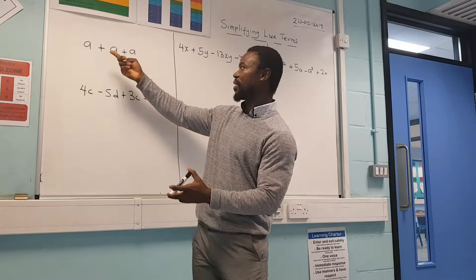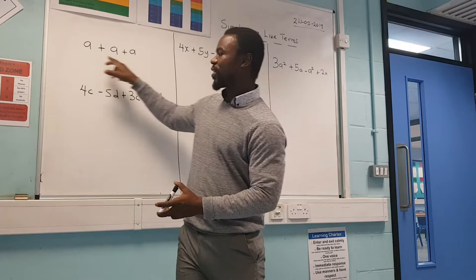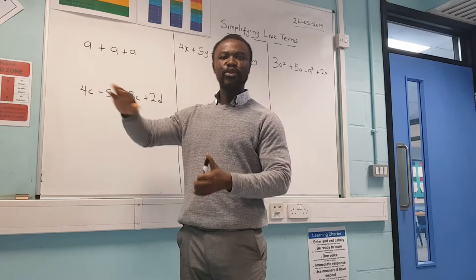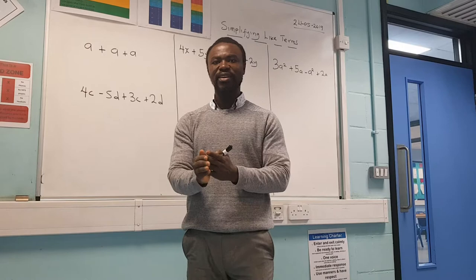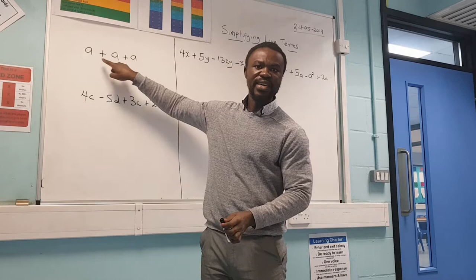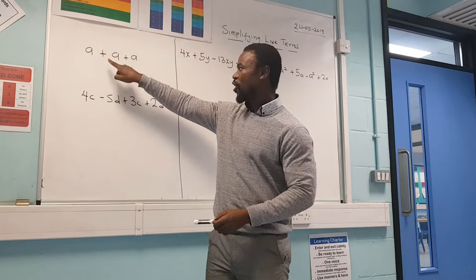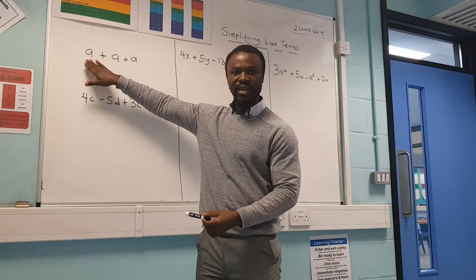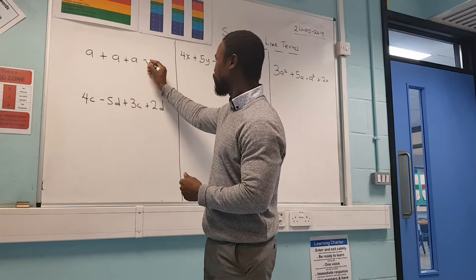If you look at this, we have a plus a plus a. To simplify this, instead of having a plus a plus a, we want to write it together as one. First, consider whether the letters are the same — here they are all a. Then ask how many there are. All the signs are plus, so I have one a plus one a plus one a, which gives me three a.